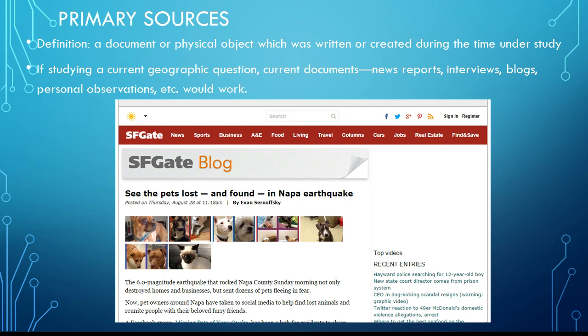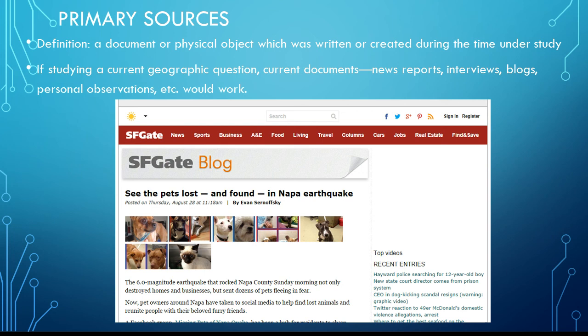Another way that we can gather information is by using primary sources. A primary source is something that was created during the time the topic was under study.